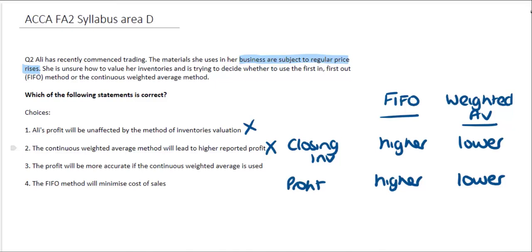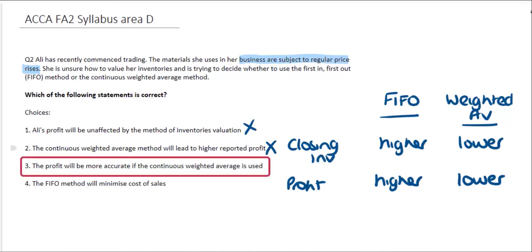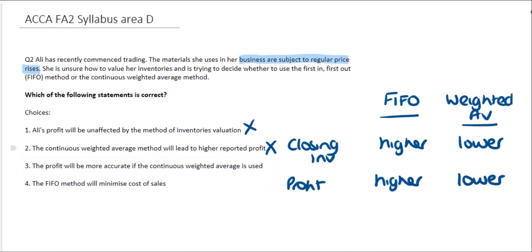The third option tells us that profit will be more accurate if the continuous weighted average method is used. This is incorrect because the business is subject to regular price rises. If the price of inventory is going up over time, using weighted average will be less accurate than using FIFO, so that option is also incorrect.